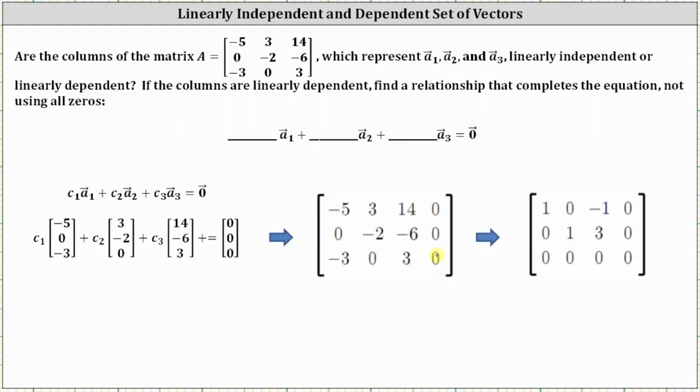The next step is to write the augmented matrix in reduced row echelon form, which I've already done here on the right to save time. Let's go and label the columns with the variables C1 through C3.